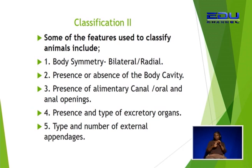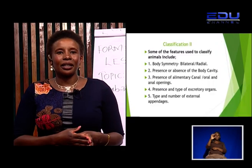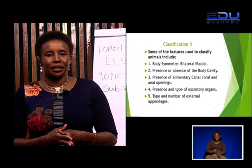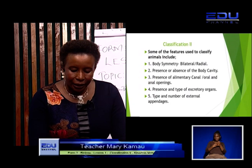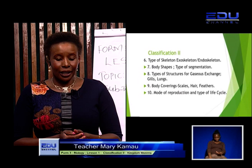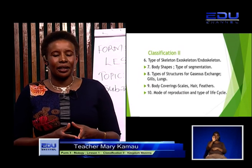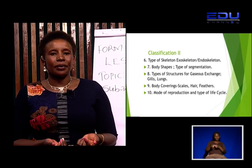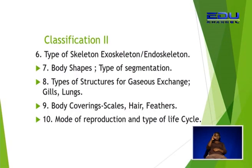Another feature is the type and number of external appendages. Some organisms have six appendages, others have two, and others have eight appendages — such as our limbs and legs. Others have different types of skeletons, which can also be used to classify these organisms. For example, we have ourselves, who have endoskeletons, while organisms such as locusts have exoskeletons, which can be used to classify them.